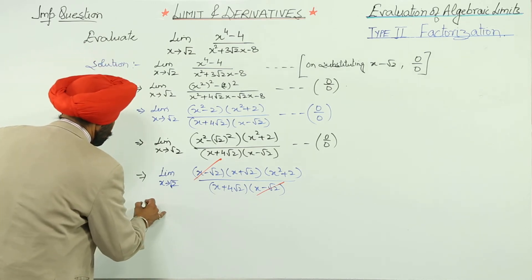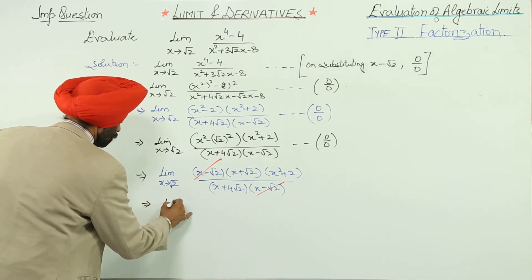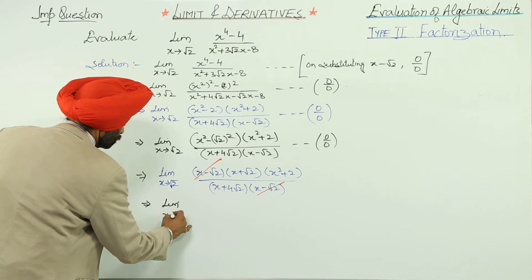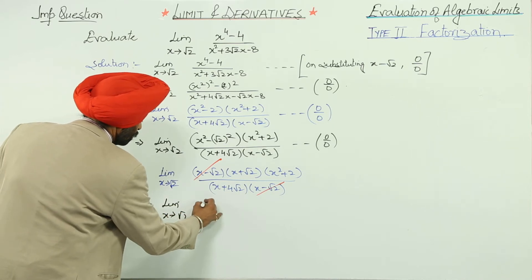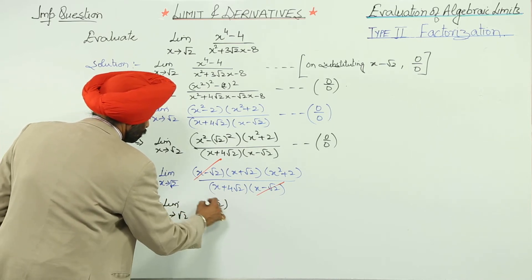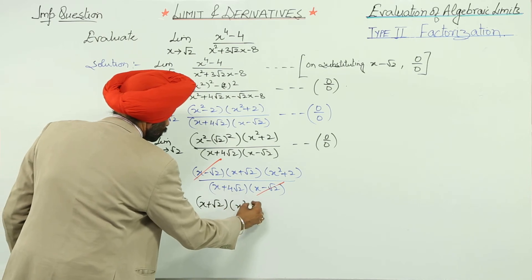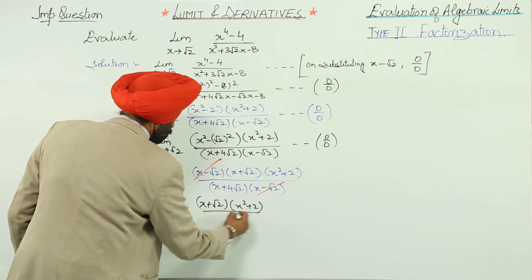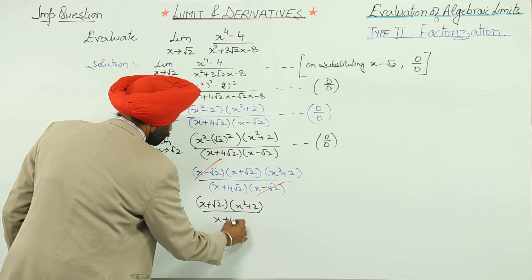Limit x approaches to root 2: x plus root 2 times x square plus 2 upon x plus 4 root 2.